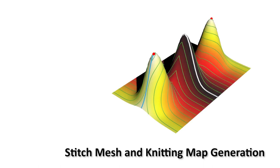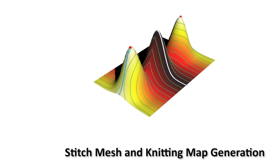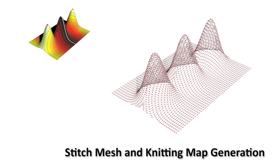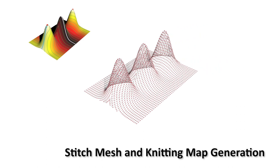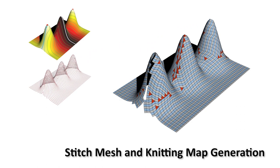To generate stitch meshes on a given surface, we extract isocurves of geodesic distance fields to use as wale curves. Quadrangles and triangles are constructed between neighboring wale curves by a graph-based optimization algorithm. Finally, courses can be traced out on a stitch mesh to generate the knitting map.